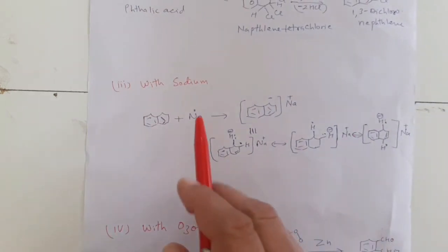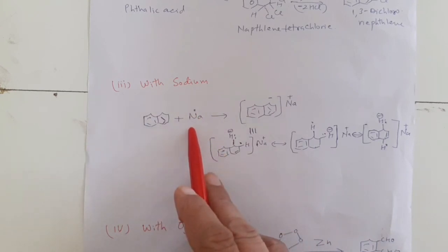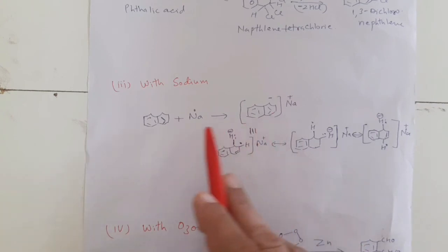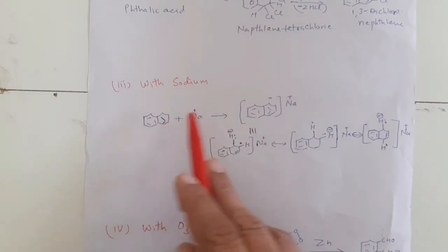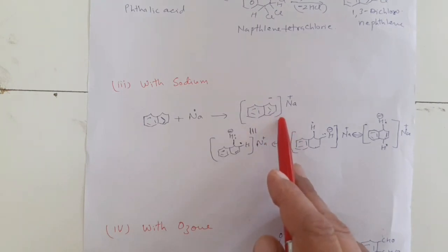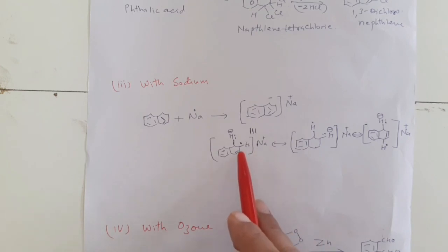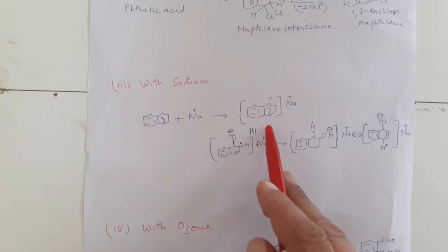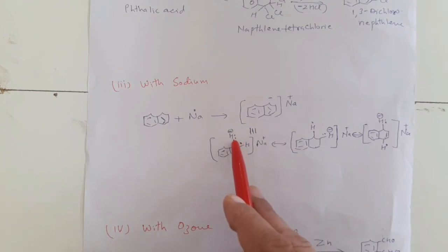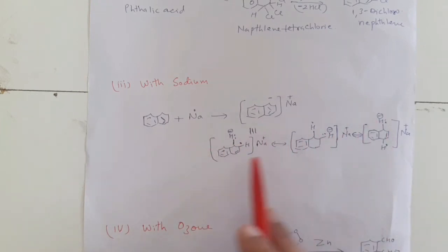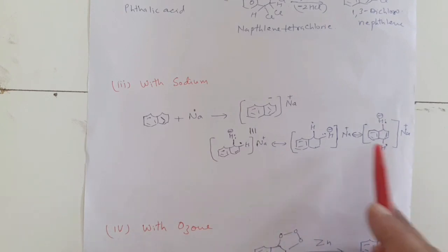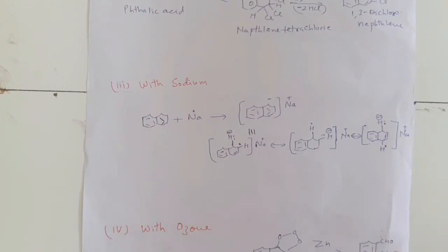Naphthalene also reacts with sodium element and with sodium it gives an ionic salt. Sodium has one unpaired electron which it gives to the naphthalene and we get this ionic salt. The structures of the ionic salt are equivalent; they are stabilized due to resonating structures. The resonating structures are such that Na⁺ is present, one double bond is broken, one position has an unpaired electron, and one has two unpaired electrons giving a negative charge. This hydrogen atom has a negative charge here, and this hydrogen atom has a negative charge here — thus we have the resonating structure which stabilizes this ionic structure of naphthalene with sodium.